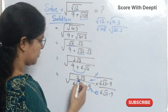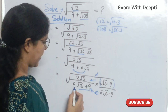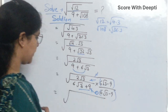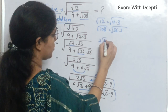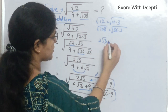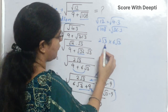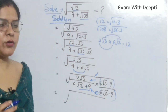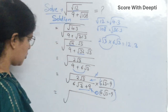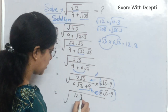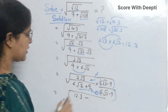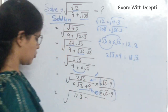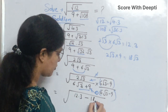Next we multiply 2 square root 3 with the numerator terms. First, 2 multiplied by 6 gives 12, and square root 3 multiplied by square root 3 gives 3, so we write 12 into 3. Next, 2 square root 3 multiplied by 9 gives 18 square root 3. So the numerator is 12 into 3 minus 18 square root 3.